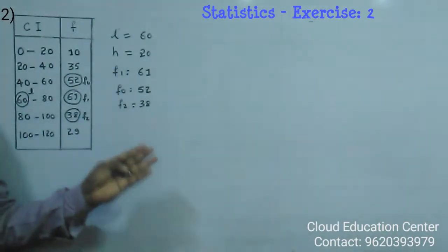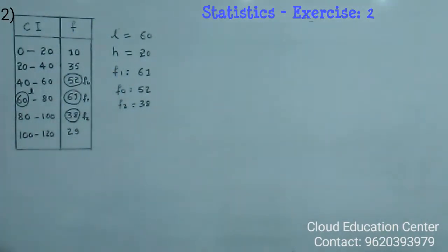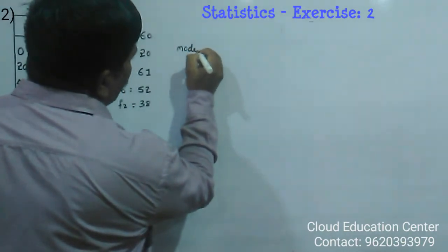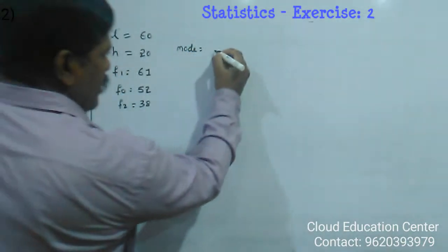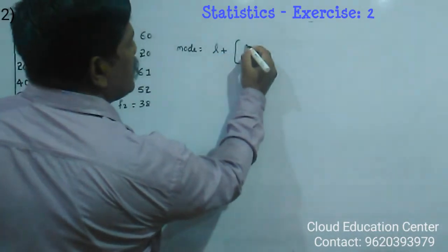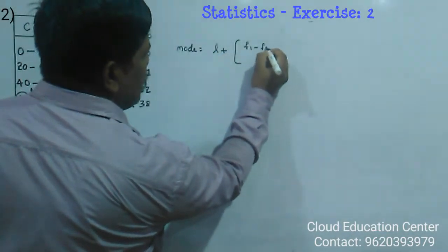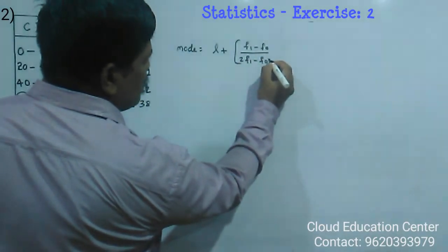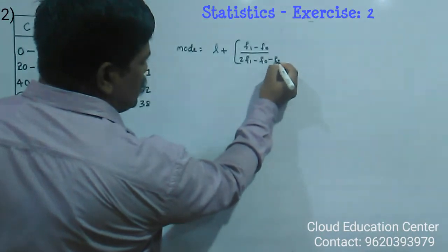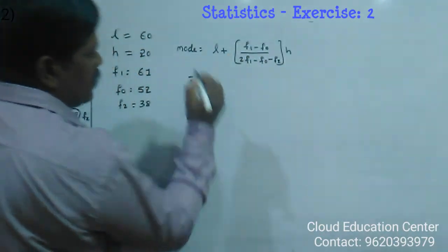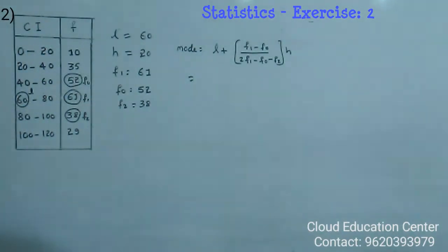So we know all the values to find the mode. We know the formula: mode equals L plus F1 minus F0 divided by 2 into F1 minus F0 minus F2 into H. Now let's substitute the values.